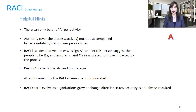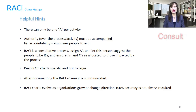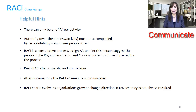Some helpful hints: there can only be one A per activity. Authority over the process or activity must be accompanied by the accountability. Empower people to act. RACI is a consultative process — assign A's and let this person suggest the people to be R's, and ensure I's and C's are allocated to those impacted by the process. Keep RACI charts specific and not too large. After documenting the RACI, ensure it is communicated across the company. RACI charts evolve as organizations grow or change direction — 100% accuracy is not always required.